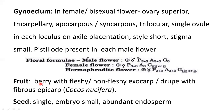Fruit may be a berry — it may be having fleshy or non-fleshy exocarp — or it may be a fibrous drupe, for example in Cocos nucifera. Seed is single, embryo is small, and endosperm is abundant.